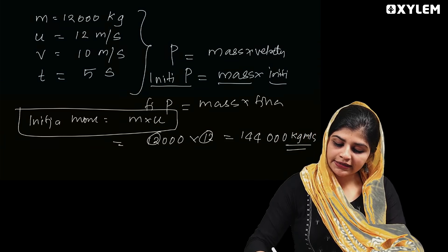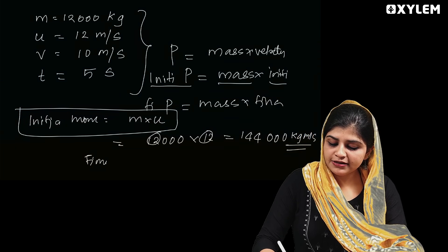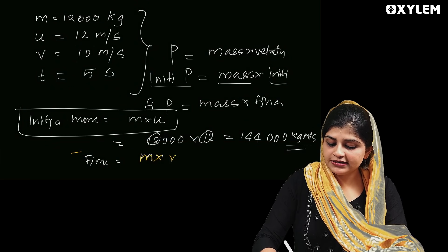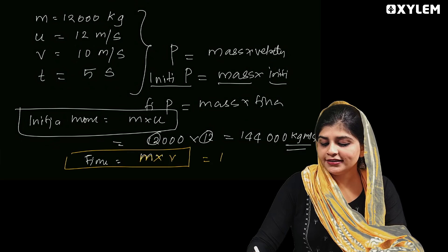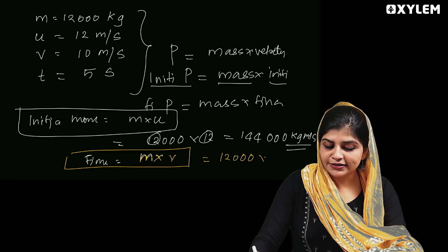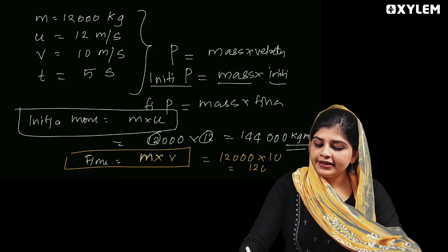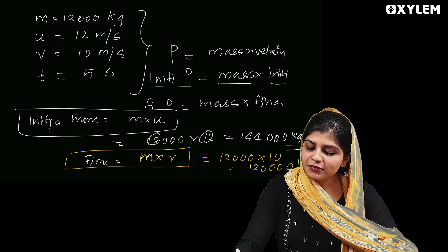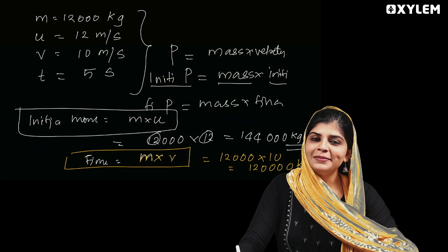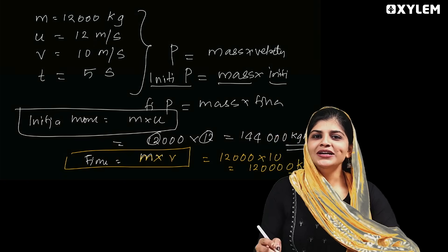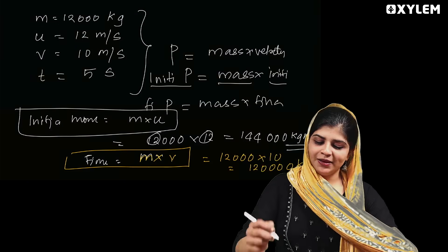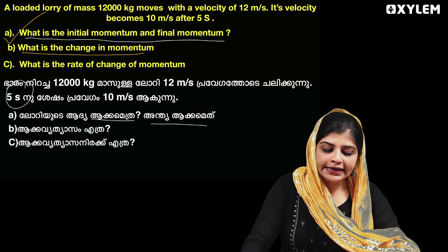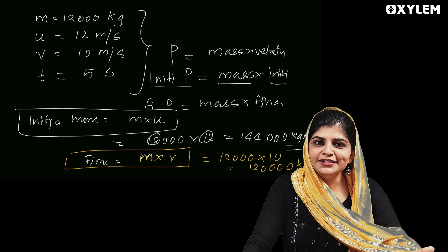Final momentum is mass into final velocity, that is 12,000 into 10, which equals 120,000 kilogram meter per second. Next, what is the change in momentum?